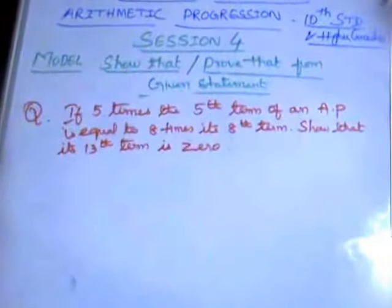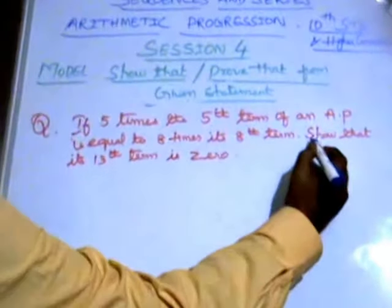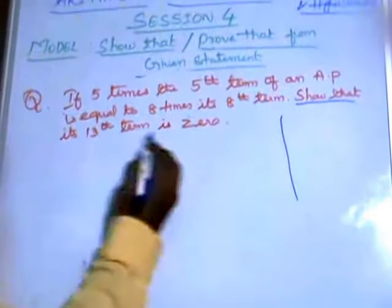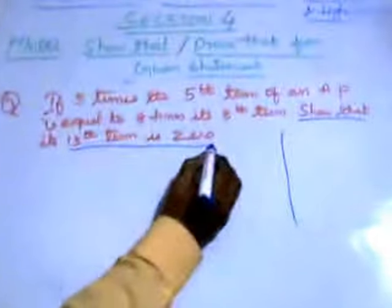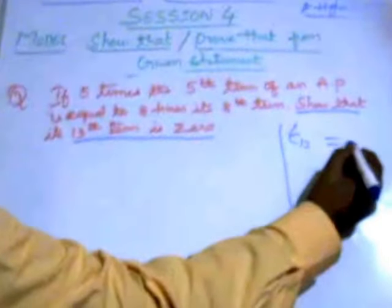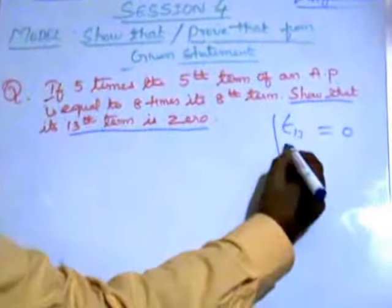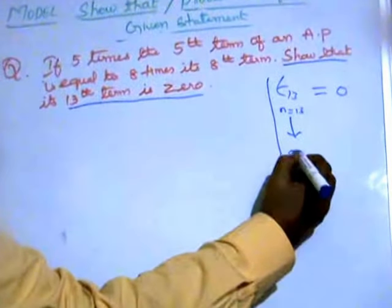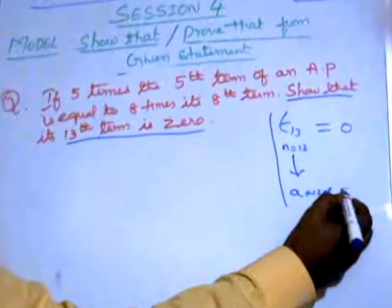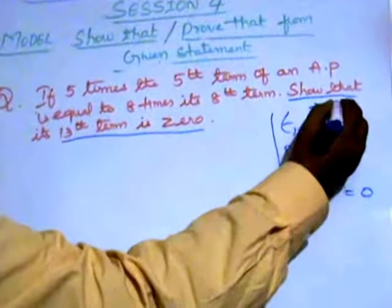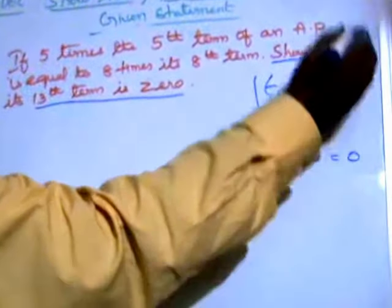Again, one more sum in this model. From a statement you have to prove something. So first, take what to prove — RTP, required to prove. The show-that says the 13th term is 0. The 13th term, T13, means n equals 13. Directly, you get a plus 12d equals 0. This is what you must show or prove.